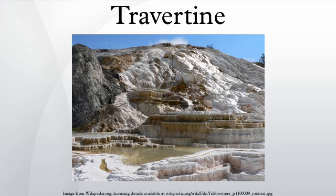Travertine is a form of limestone deposited by mineral springs, especially hot springs. Travertine often has a fibrous or concentric appearance and exists in white, tan, cream-colored, and even rusty varieties. It is formed by a process of rapid precipitation of calcium carbonate, often at the mouth of a hot spring or in a limestone cave.